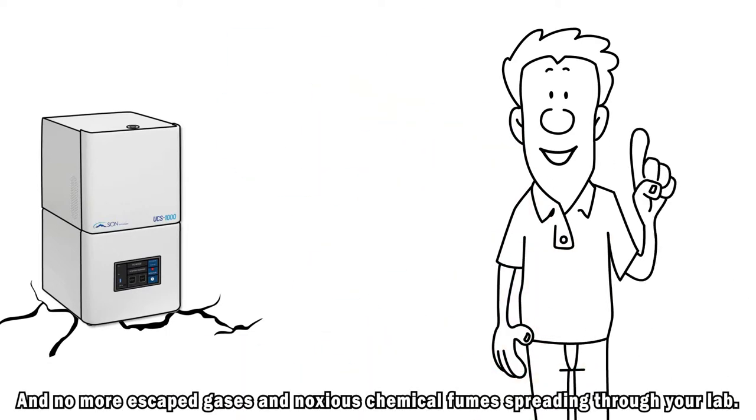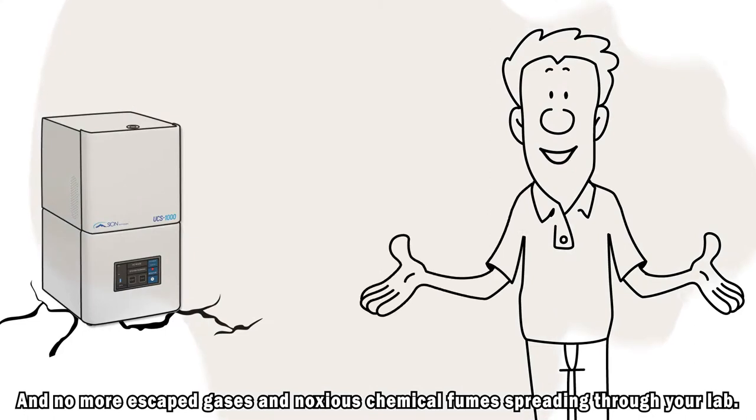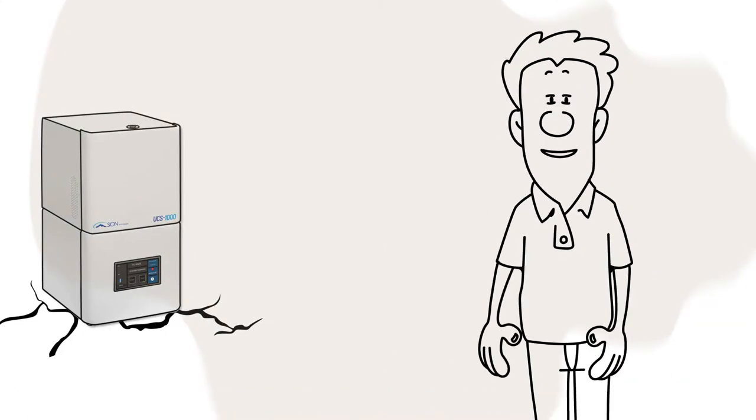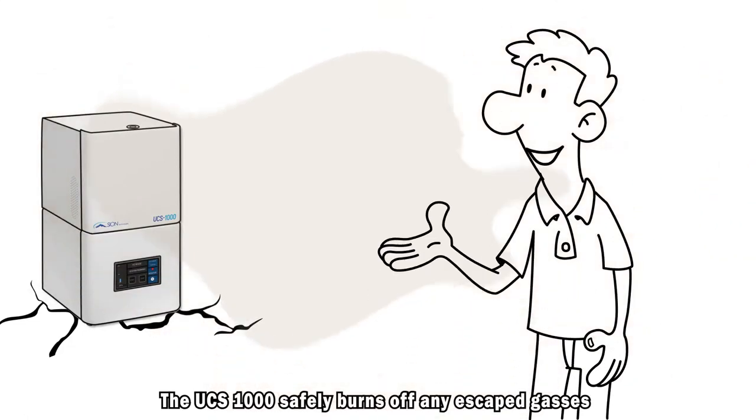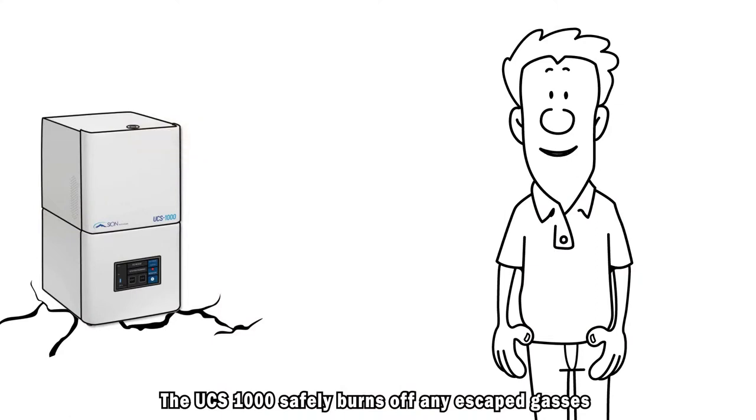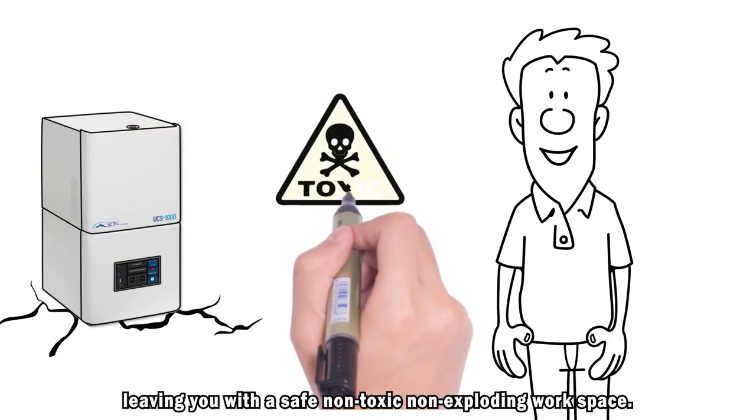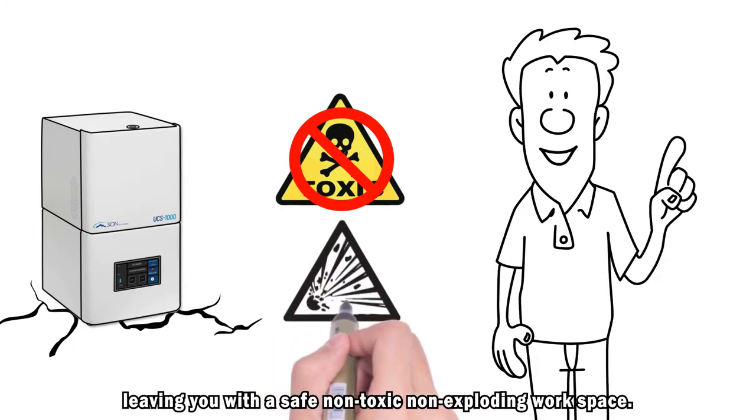And no more escaped gases and noxious chemical fumes spreading through your lab. The UCS-1000 safely burns off any escaped gases and turns them into water vapor and CO2, leaving you with a safe, non-toxic, non-exploding workspace.